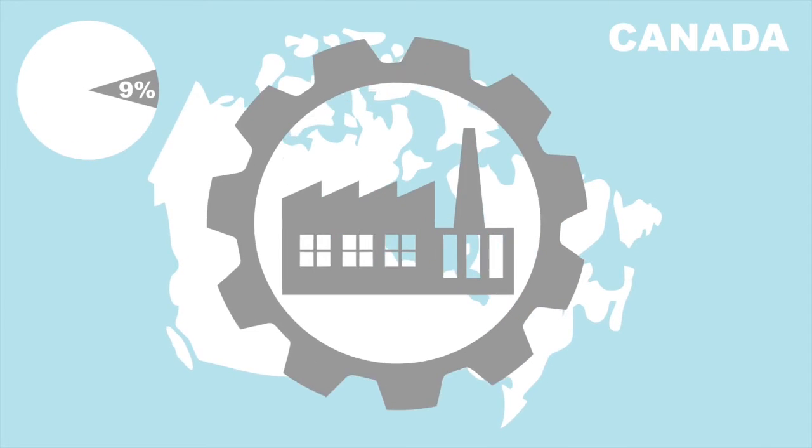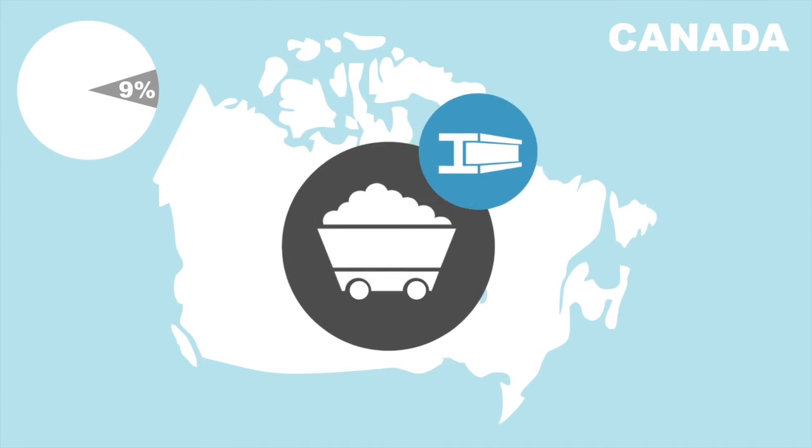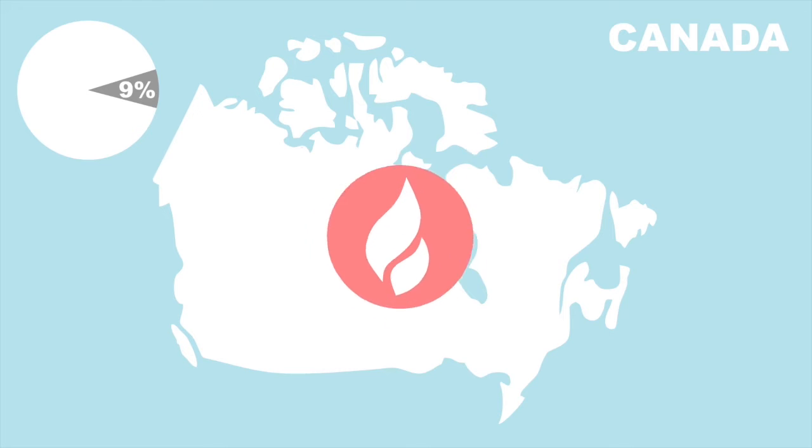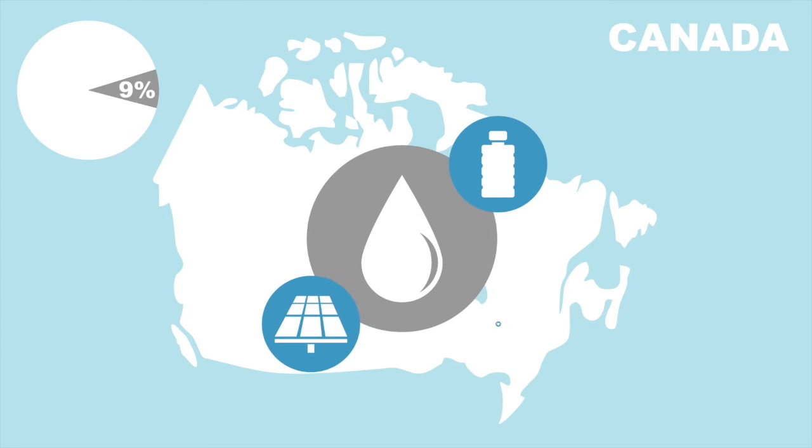The last 9% of energy is used for Canadian industries. Coal is used in the making of steel, natural gas has many applications, and oil is used to make a great number of petrochemicals like plastics, solar panels, and clothes.